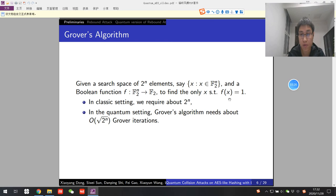Given a search space of 2 to n elements, say there is only one x that makes f(x) equal to 1. We are finding x. In classical setting, we require about 2 to n. And in quantum setting, Grover's algorithm needs only square root of that complexity.